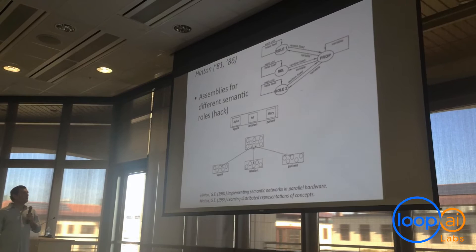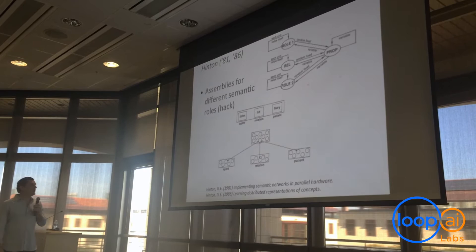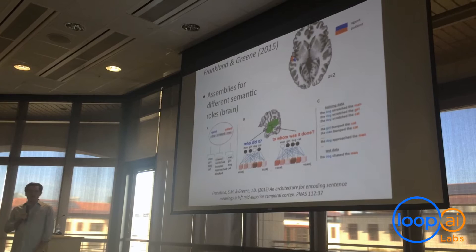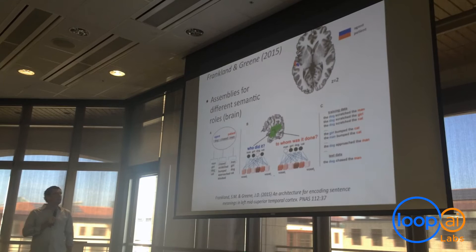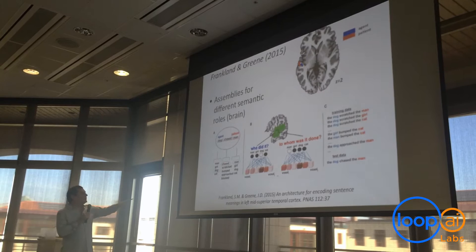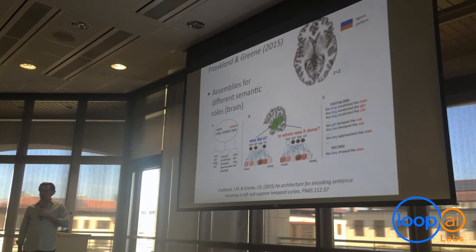It works pretty well for the kinds of neural networks they had at the time, although when I read that I always thought it was kind of a hack — surely you can't just put these assemblies in there, and probably the brain doesn't really work that way. That's what I always thought until three weeks ago, when an article came out in the Proceedings of the National Academy of Sciences. A couple of guys at a psych department at Harvard, Franklin and Green, did fMRI studies looking at the left mid superior temporal cortex and found the exact assemblies in the brain that were predicted 30 years ago — a patient assembly and an agent assembly.